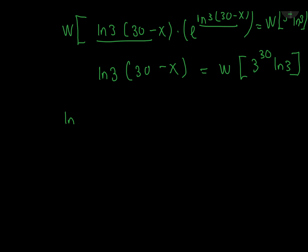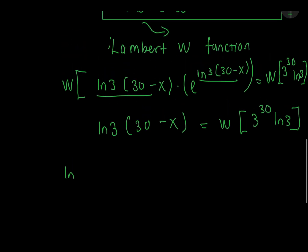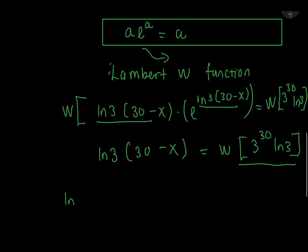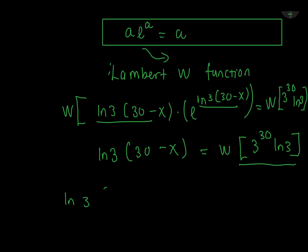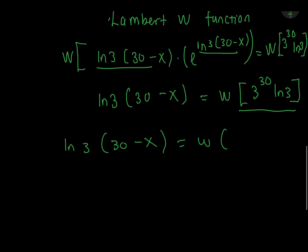In order to get rid of this value, we have to make this somehow to be in a form of a e to the power a, so that it can be equal to a. The way to do this is to separate. You know that 30 can be written as 27 plus 3.